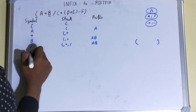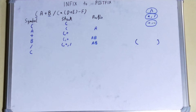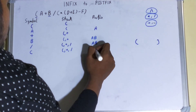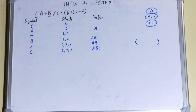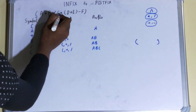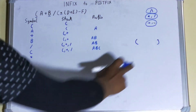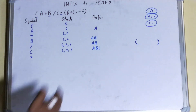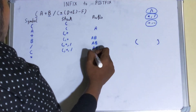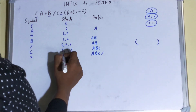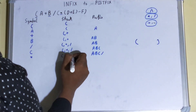Next we get C, which is an operand, so we place it in the postfix column. Now we encounter asterisk. Since asterisk and division have the same priority, we must pop out division first — giving postfix A B C /. Then since asterisk has higher priority than plus, it's fine to stack asterisk in now.